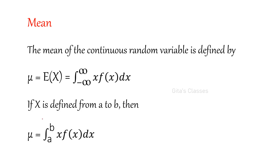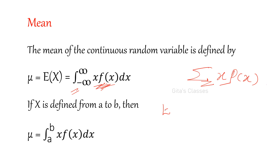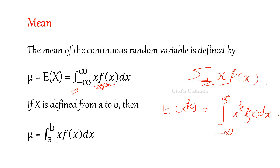The mean of the continuous random variable is defined as mu equals E of x, that is the integral from minus infinity to plus infinity of x times f of x dx. In discrete we had sigma of x times p of x — the same thing, just replacing sigma with integration and p of x with f of x. If you want to find E of x to the power k, it is the integral from minus infinity to plus infinity of x to the power k times f of x dx. If the function is defined from a to b, then mu equals the integral from a to b of x times f of x dx.